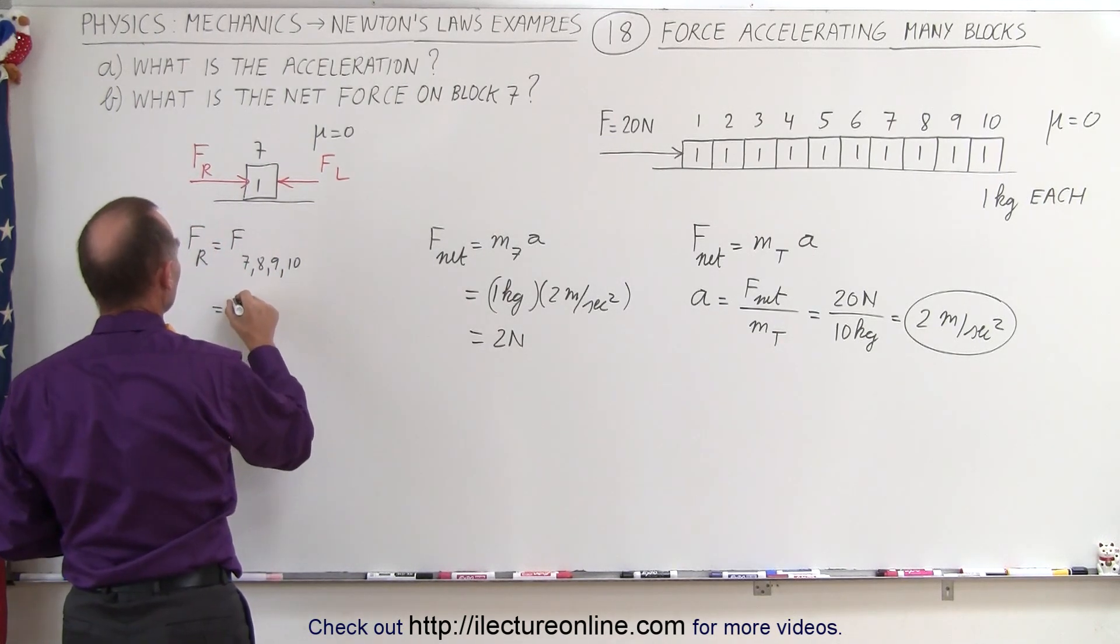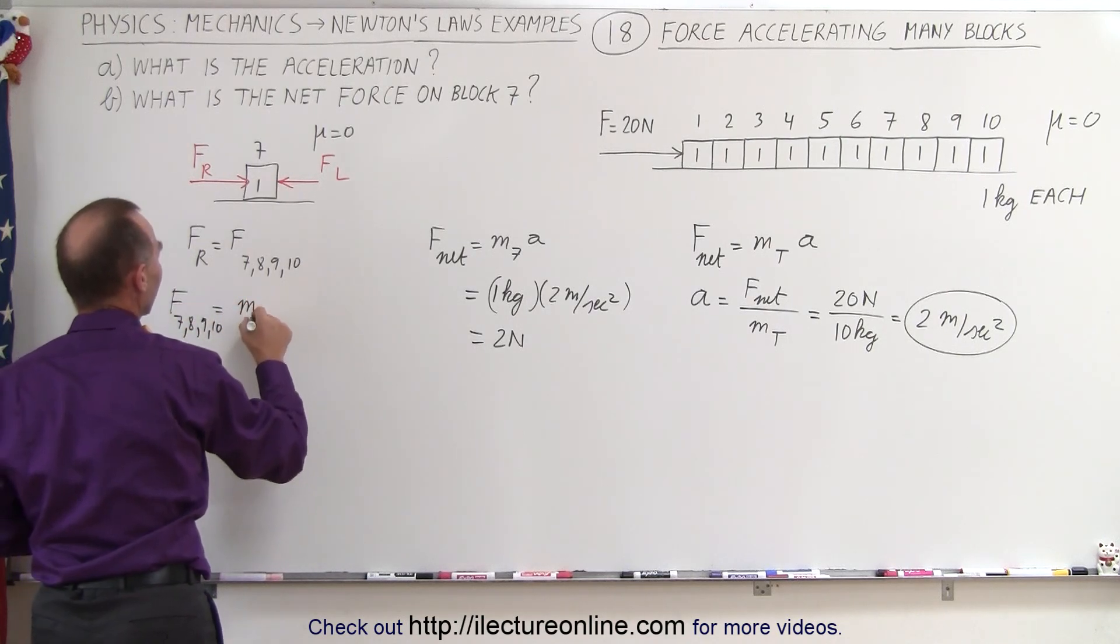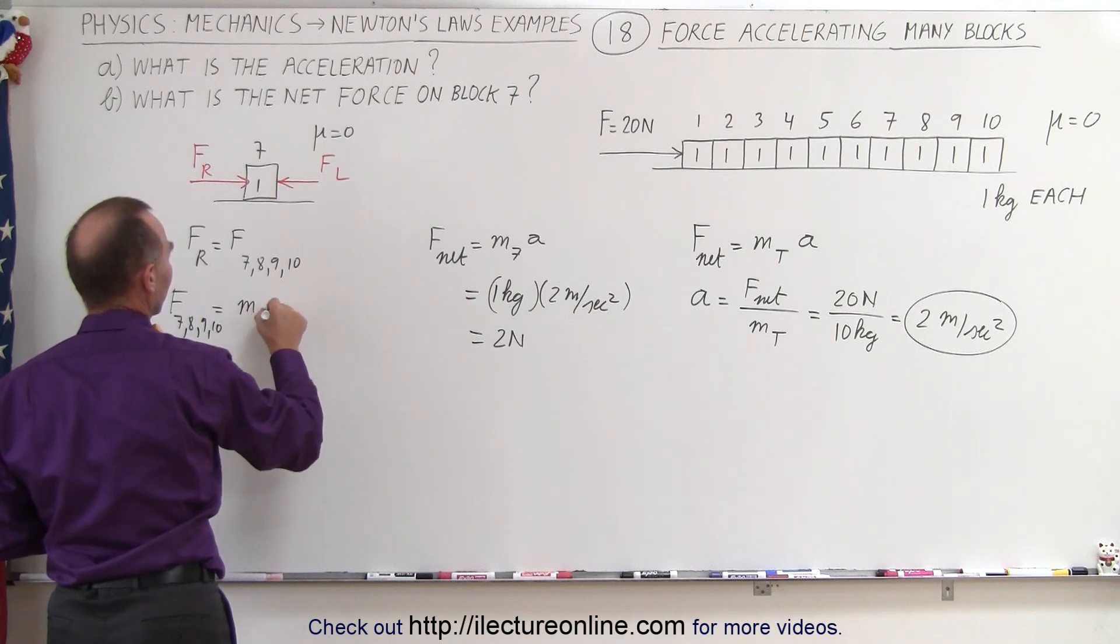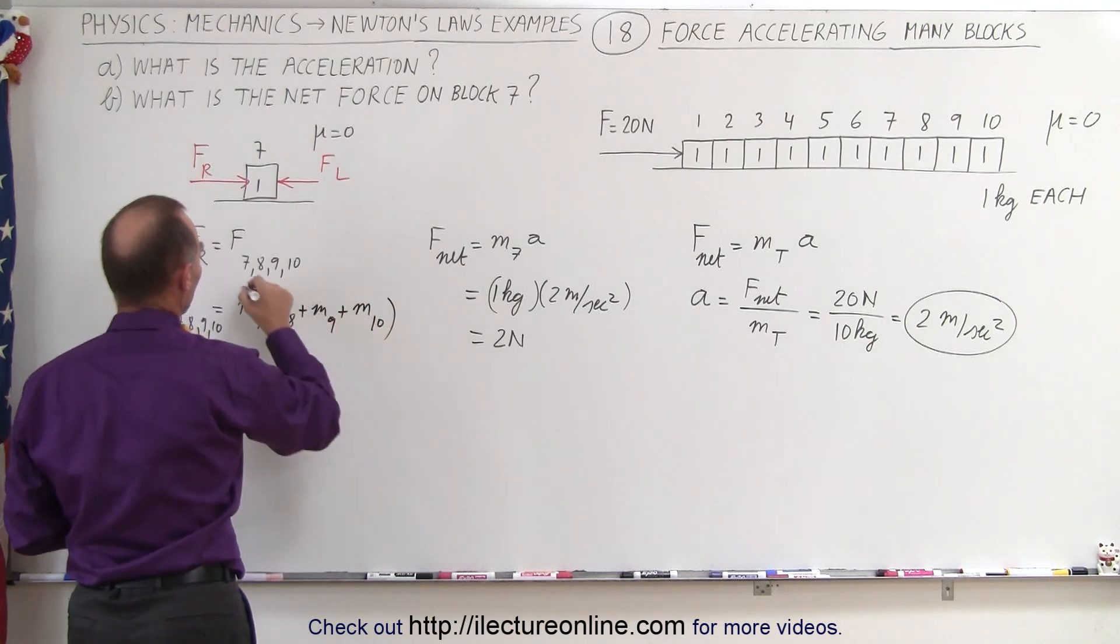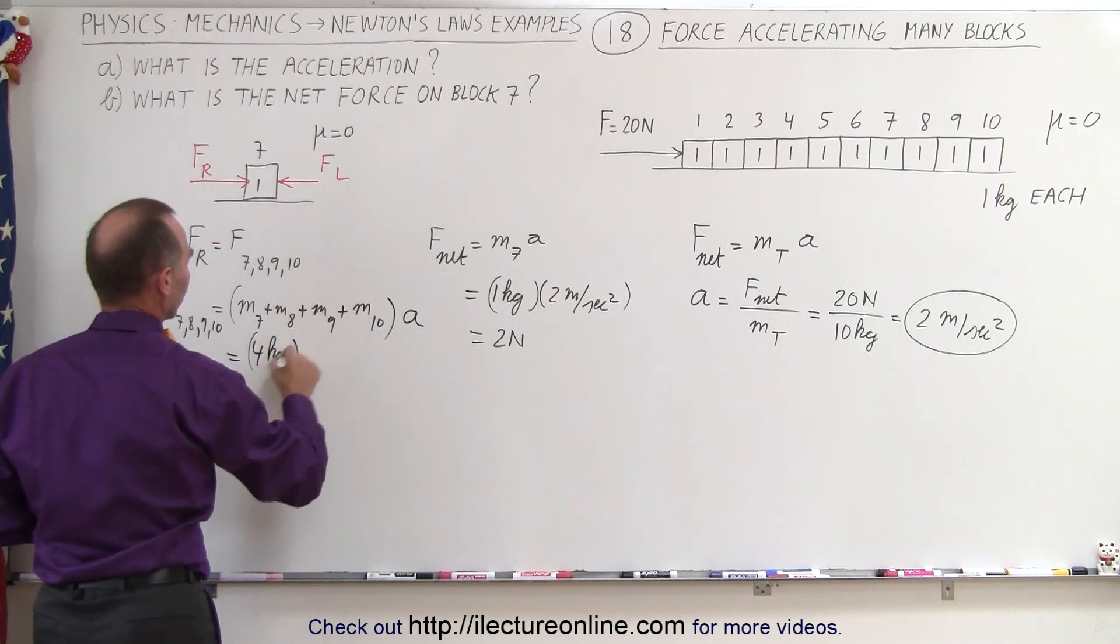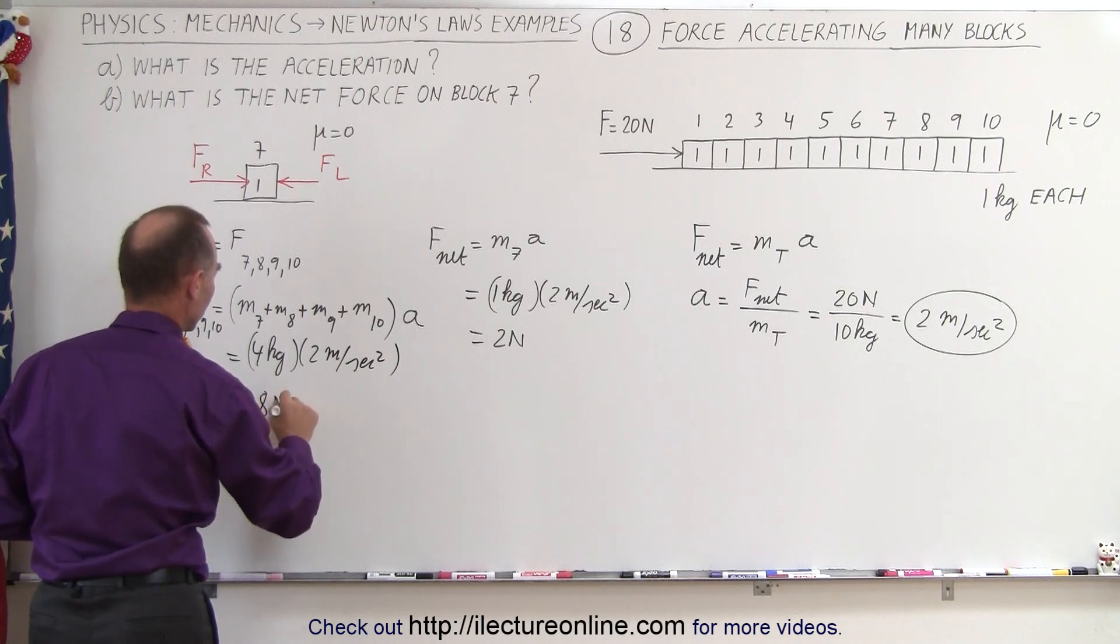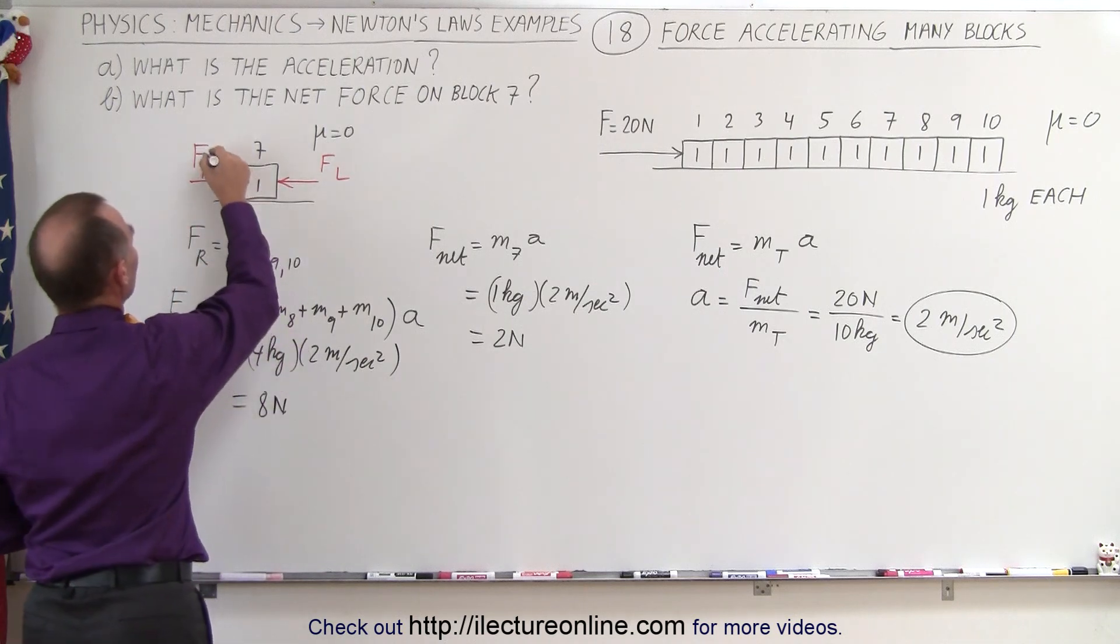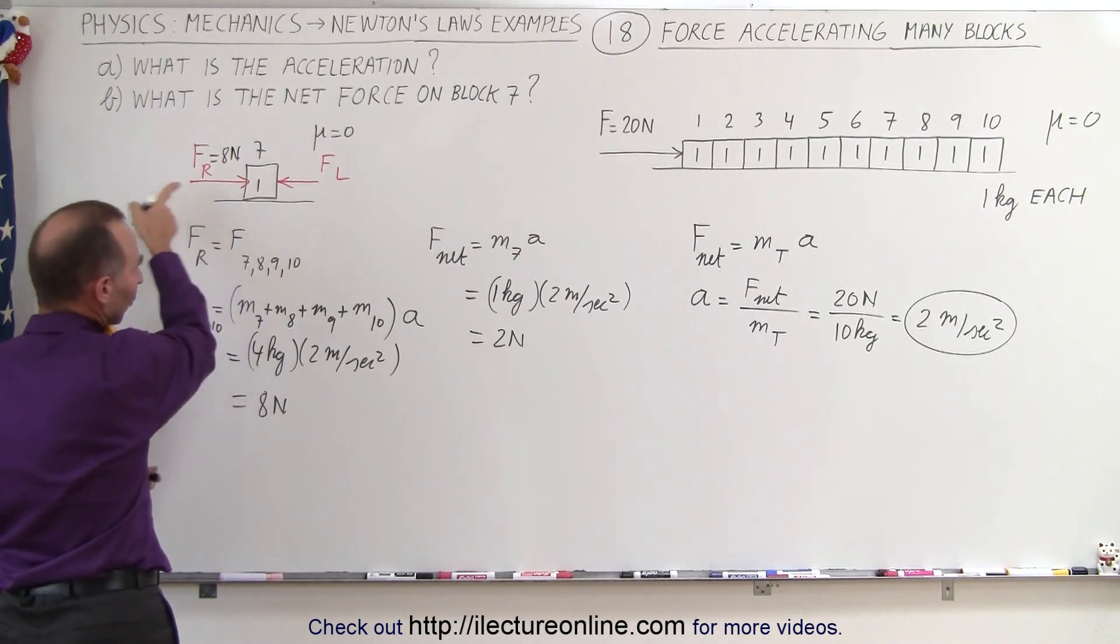Well, we can say that that would be F net, so we can say F on blocks 7, 8, 9, and 10 are equal to the mass of 7 plus the mass of 8, plus the mass of 9, plus the mass of 10, multiplied times acceleration. And so this would be 4 kilograms times 2 meters per second squared, and so that would be equal to 8 newtons. So we know that we have a force equal to 8 newtons pushing from the left to the right, so force to the right.